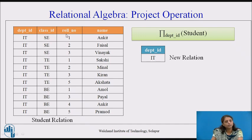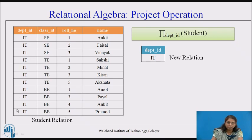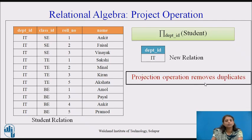Consider the student relation again. If we want to project only department ID, we write pi subscript department_id of student. The output contains only that column. Even though there are multiple records, the result has only a single record, because relational algebra treats the result as a set — so the project operation removes duplicates.